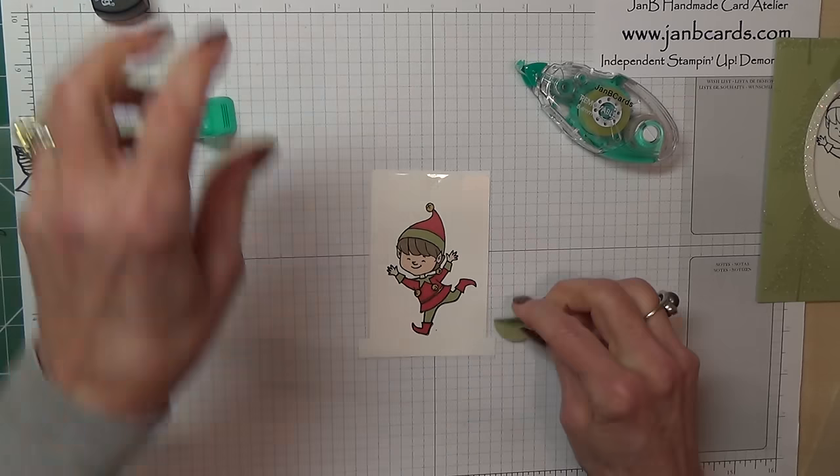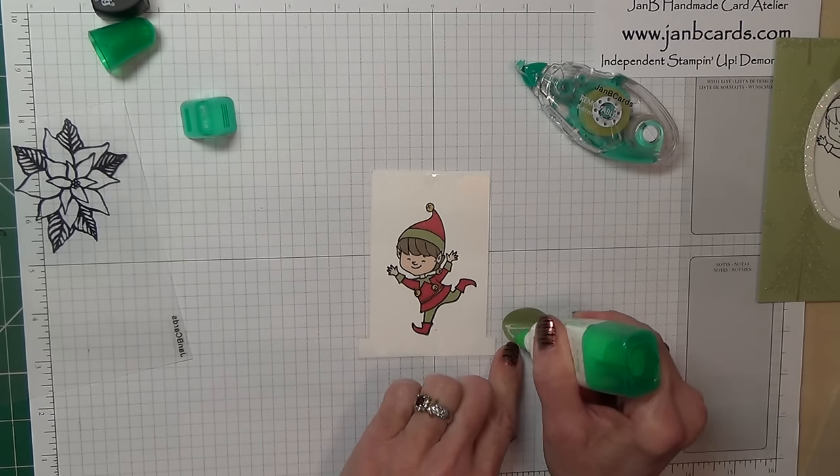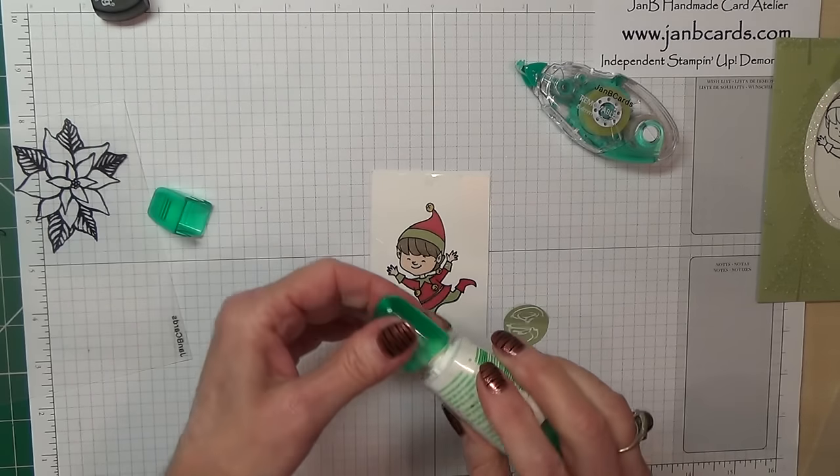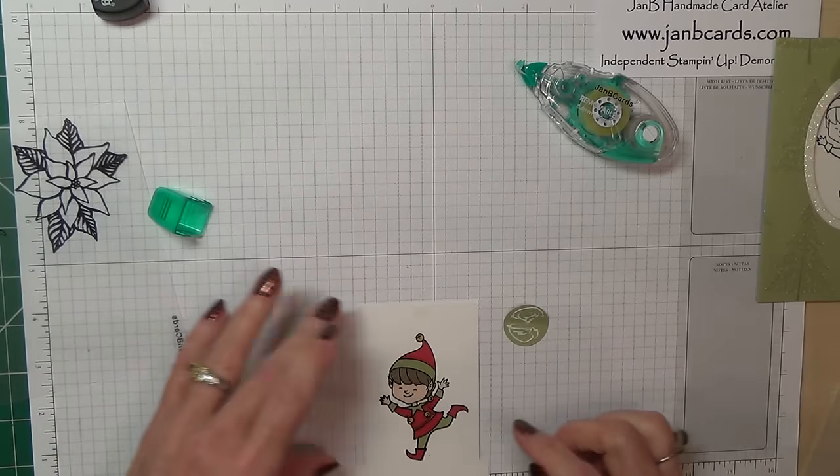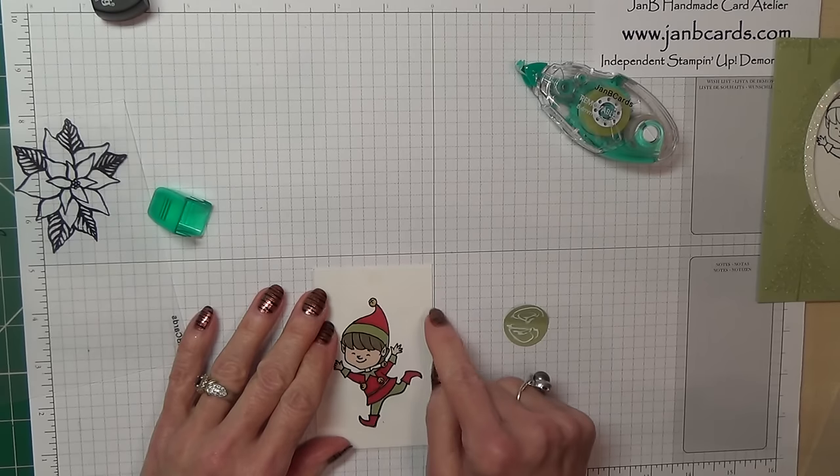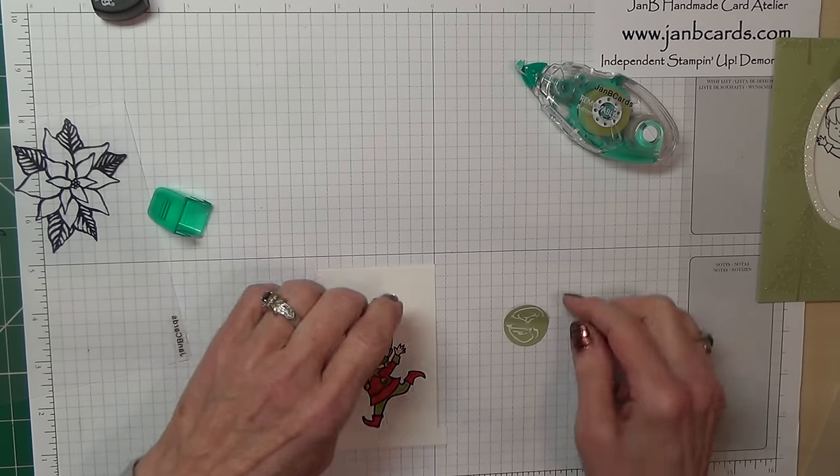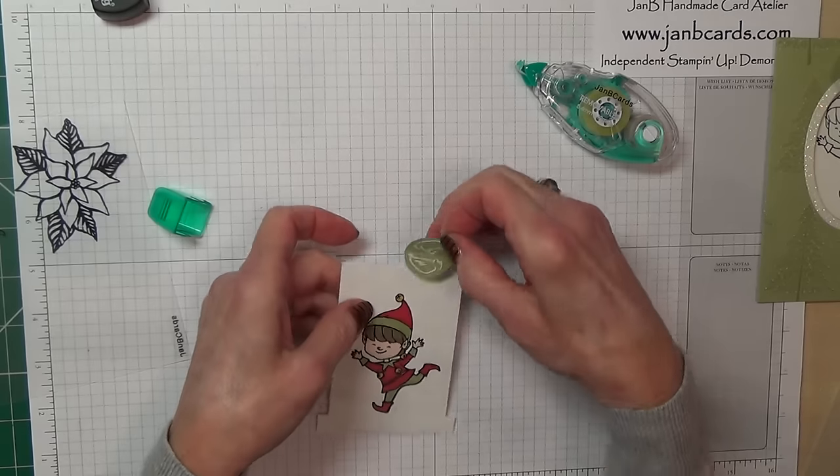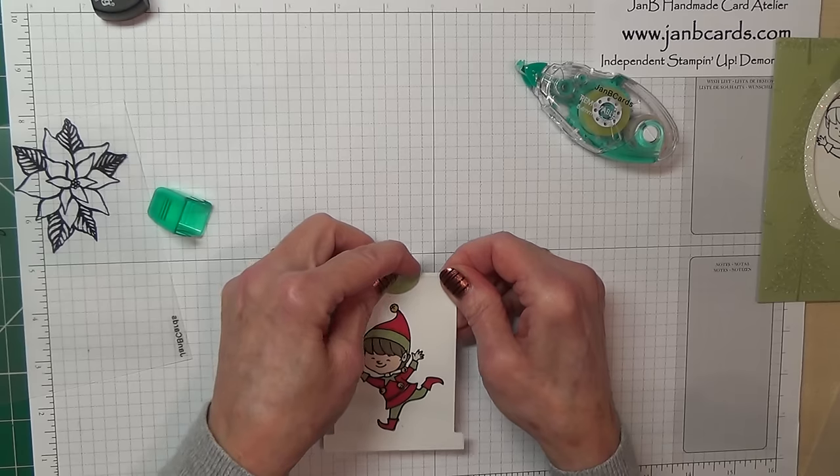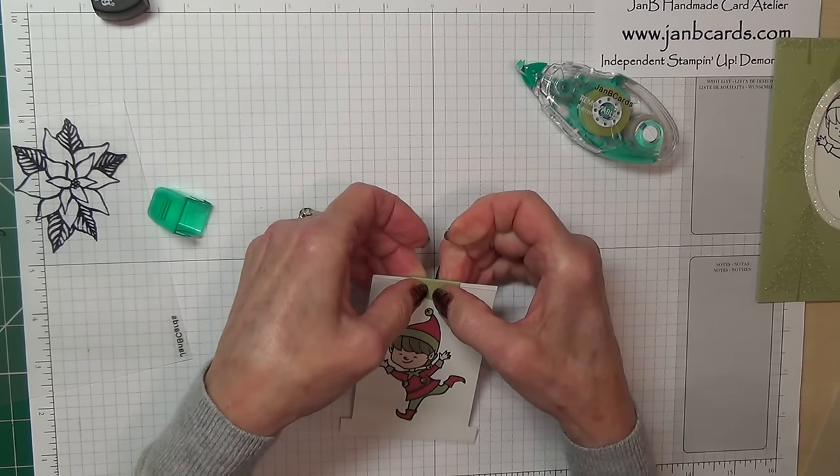I use wet glue for this, Tombow, and I put some on both sides. Then I work out what the middle is. So that bell looks as if it's absolutely halfway across. Pop that underneath and then that over the top. Just give it a couple of minutes for the Tombow to grab hold.